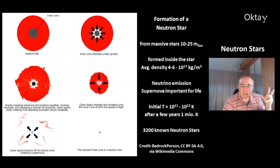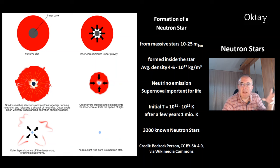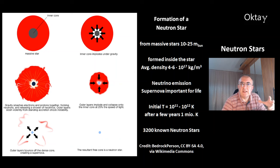This picture shows you the formation of a neutron star. For this you need a massive star of 10 to 25 solar masses. These types of stars have a very short main sequence lifetime of about a few million years. They quickly run out of hydrogen. Without radiation pressure there is no resistance against gravity. You can see the inner core implodes under gravity, so the neutron star is formed inside the star.